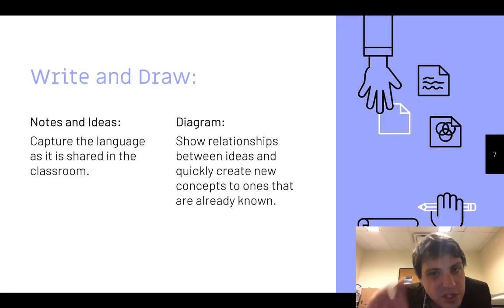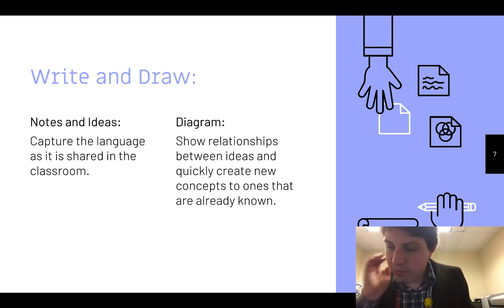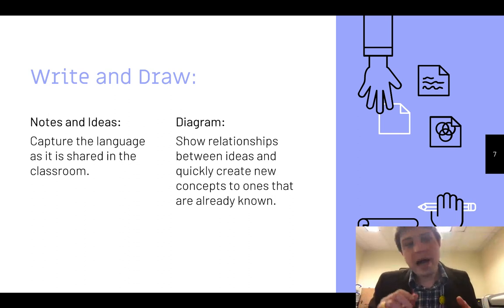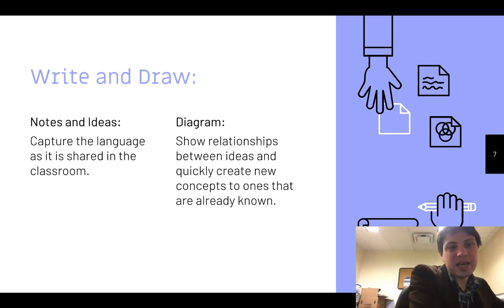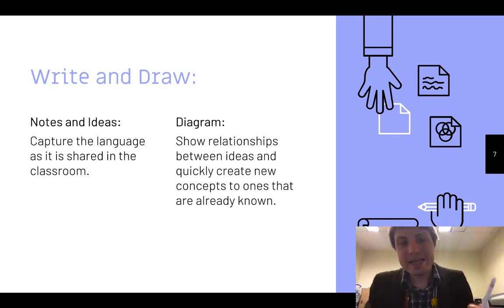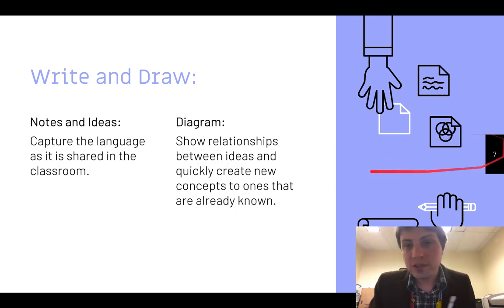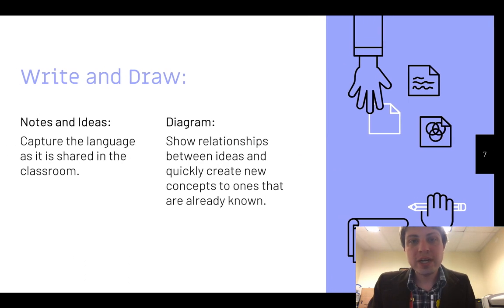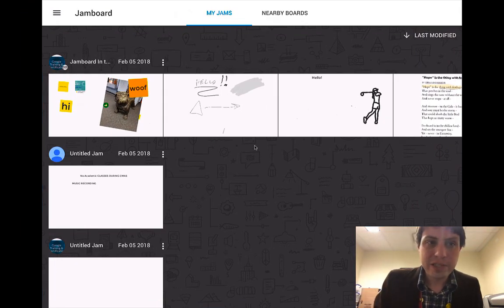Those are all the features directly in there. So let's talk about what's possible inside of Jamboard and take a look at that. Obviously writing and drawing are a huge element — notating ideas, capturing language as it's shared in the classroom, or diagramming and showing relationships between ideas. These are very typical regular whiteboarding tools. I'm going to open up Jamboard on my iPad and we'll take a look at what that looks like.